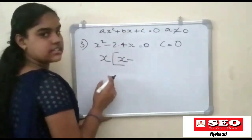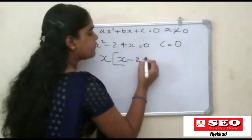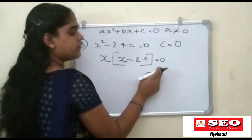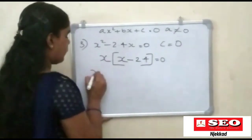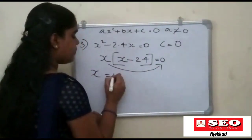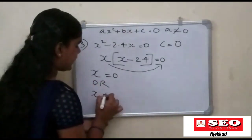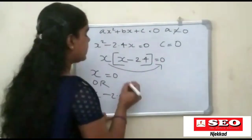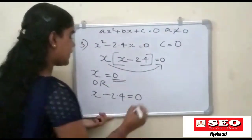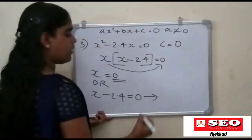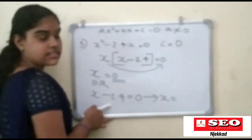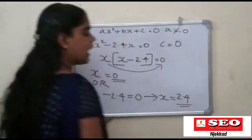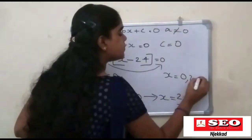x plus 2 is zero. Back in: x into x minus 2.4 is equal to zero. So now we have x into x minus 2.4 equals zero. Therefore x is equal to zero, or x minus 2.4 is equal to zero. So x minus 2.4 equals zero and we have x minus 2.4 equal to zero and 2.4.